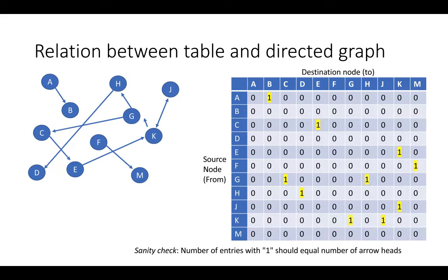Previously we looked at the adjacency matrix for undirected graphs and saw symmetry along the diagonal axis. For a directed graph, that's not true — there is no symmetry. The edge between G and H: there is an edge that goes from H to G, but there is not an edge that goes from G to H. So from H to G there is an edge, and from G to H there is not — this is the asymmetry you see in the adjacency matrix of a directed graph.